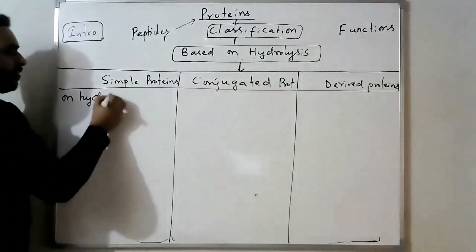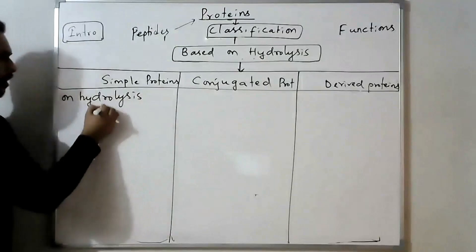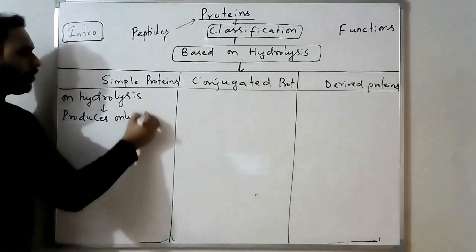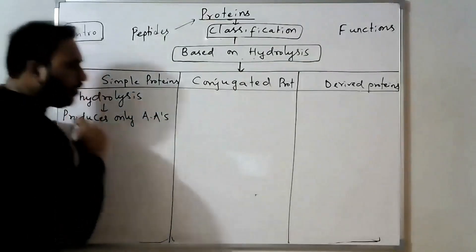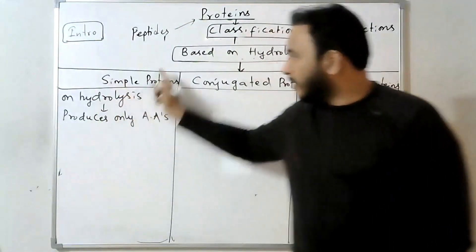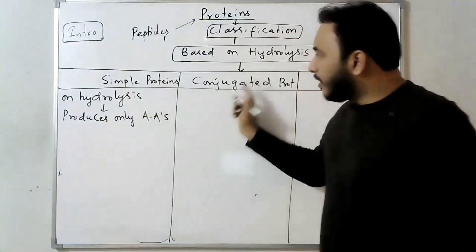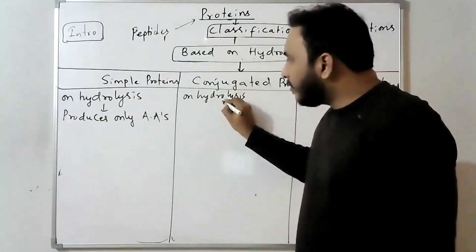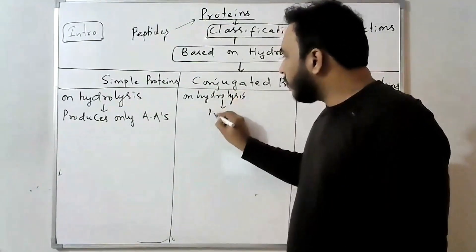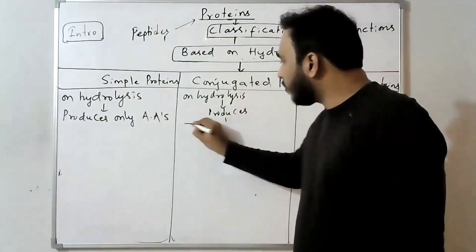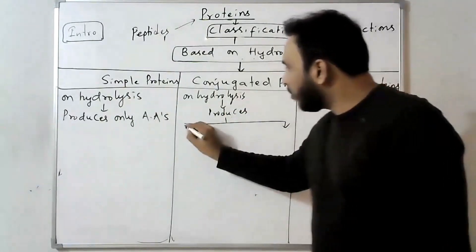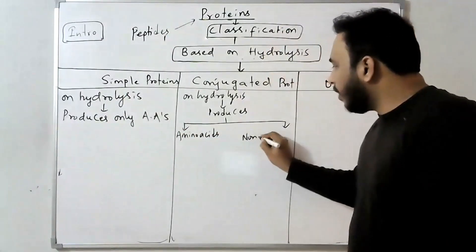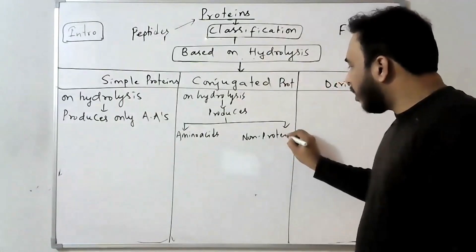Simple proteins, on hydrolysis, produce only amino acids — nothing else. Conjugated proteins, on hydrolysis, produce amino acids along with a non-protein component.